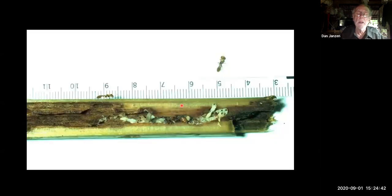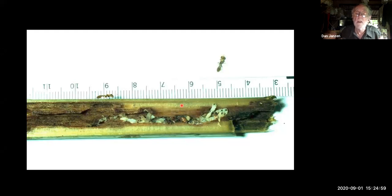The third element: there are ants in the system who live in hollow twigs. This is a hollow twig off a tree branch that had been hollowed out by some insect, and the ant colony is inside of it — they live in trees, not in the ground. They live in hollow twigs in trees as part of their normal life. And these ants are predators, running around catching insects.